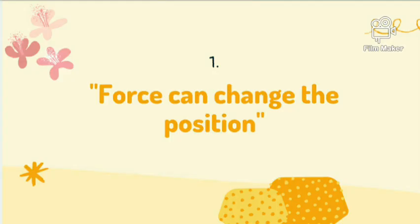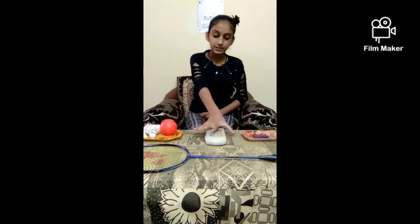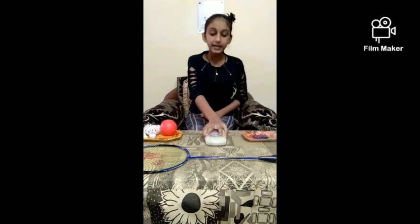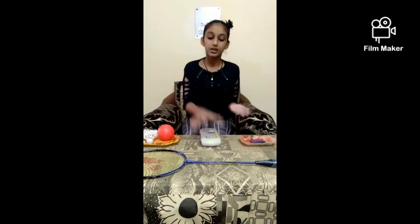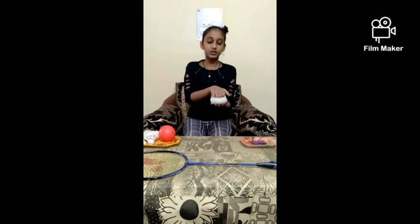First, force can change the position. To explain this effect, I have a geometry set on the table. I will hold this geometry with my hand, lift it, and put it on my hand. I changed the position of this geometry from point A — its original place on the table — to point B, which is my hand. This depicts that force can change the position of an object.